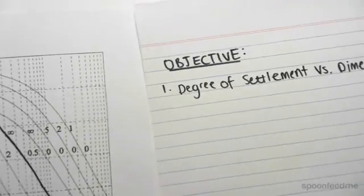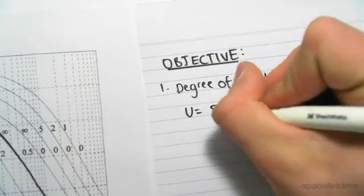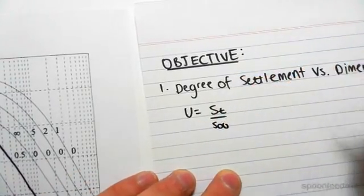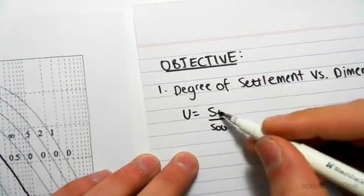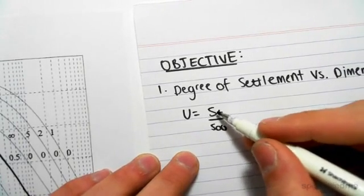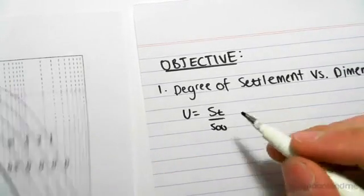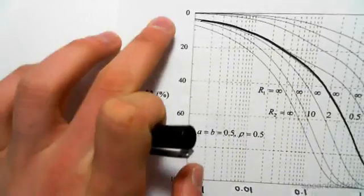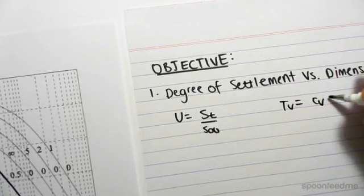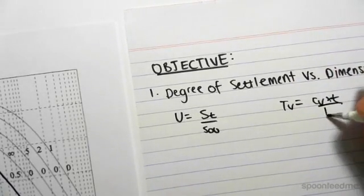Now, if we were just to define these things, we have that U equals S, the settlement at any time, over the final settlement. So obviously, when you're looking at a time of final settlement over the final settlement, you're getting to 100%. So it just ranges from 0 to 100%, and Tv equals Cv times T over H squared.